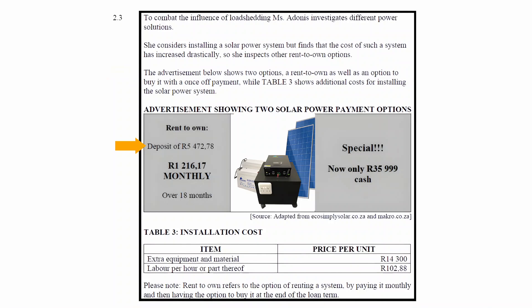The rent-to-own option requires a deposit of R5,472.78 with a monthly payment of R1,216.17 over a period of 18 months. If bought with a once-off payment, the cash price is R35,999. This excludes extra equipment and material of R14,300 and labour per hour or part thereof of R102.88. Note that rent-to-own refers to renting a system by paying monthly and then having the option to buy it at the end of the loan term.